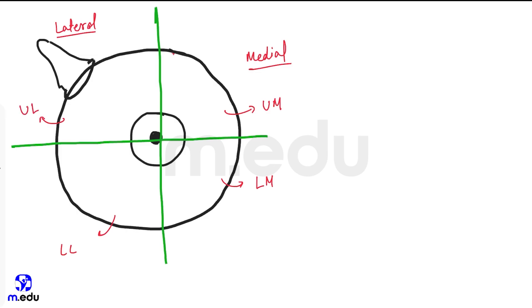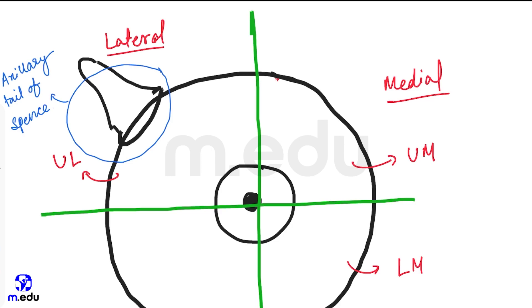The structure which we can see here clearly, this is called as axillary tail of Spence. Basically, it is the connection between the mammary gland and the fascia. Third heading: extent of mammary glands.